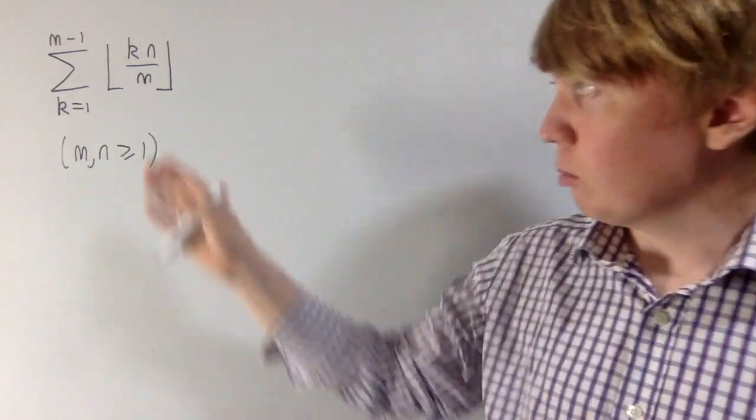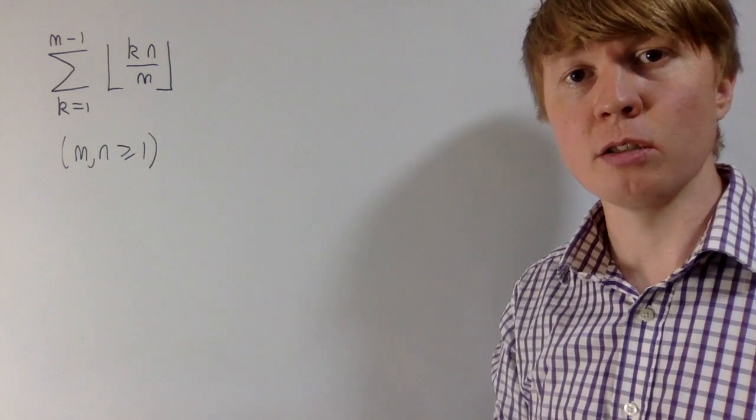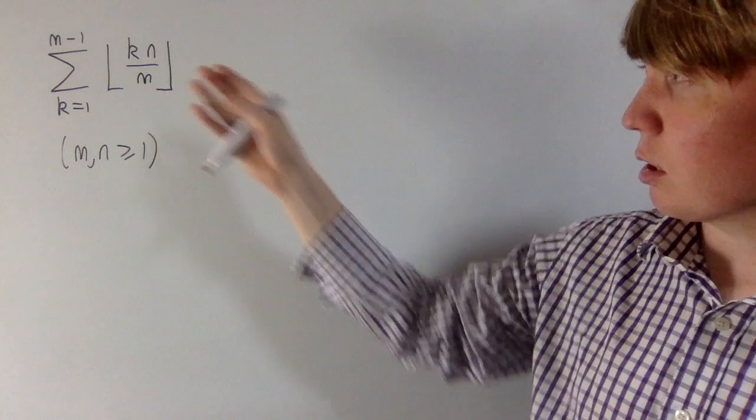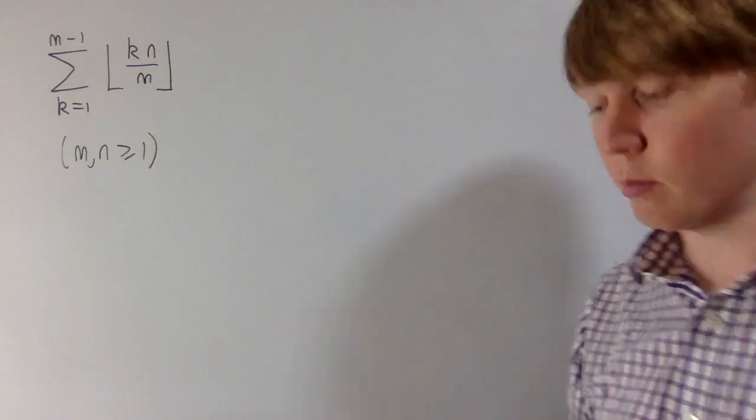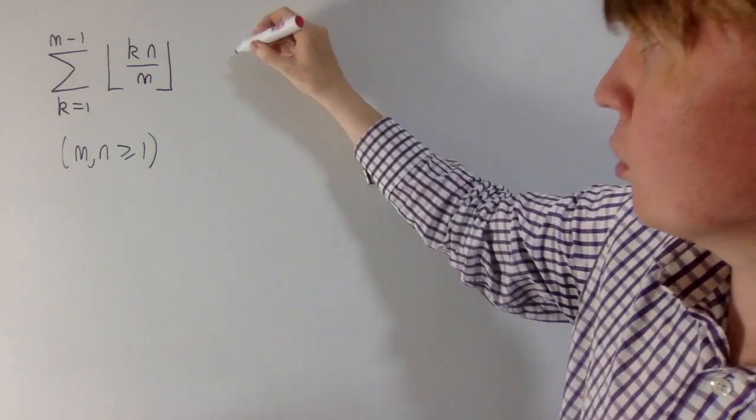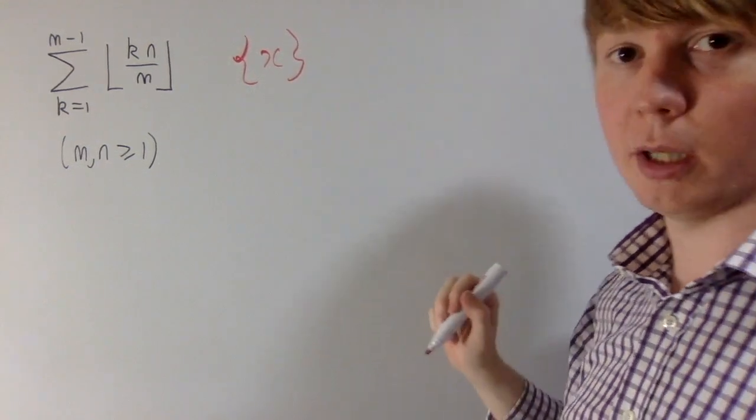Okay, so we've got a problem where we need to evaluate the sum of floor functions of fractions where m and n are both integers greater than or equal to 1. To get started, instead of having this expressed using the floor function, we'll introduce some more notation. You can think of the floor function as being the integer part of a number, but we're going to be interested in also expressing the fractional part of a number.